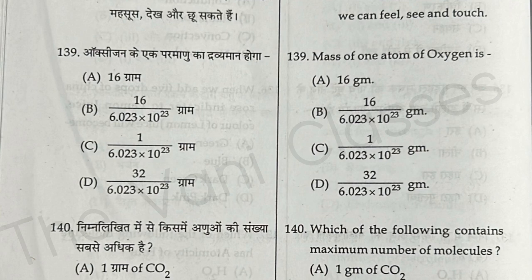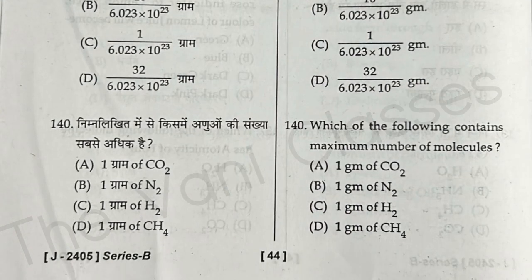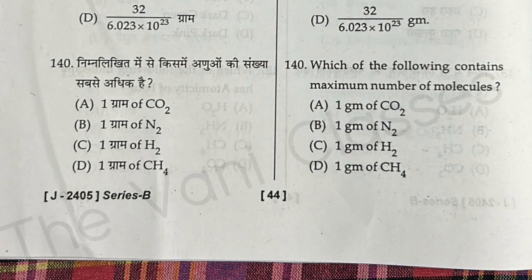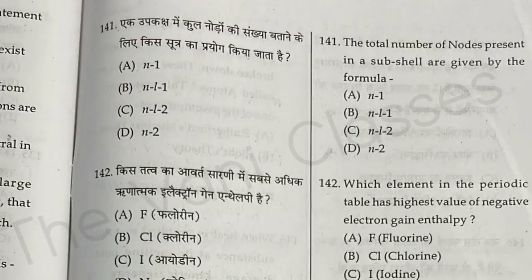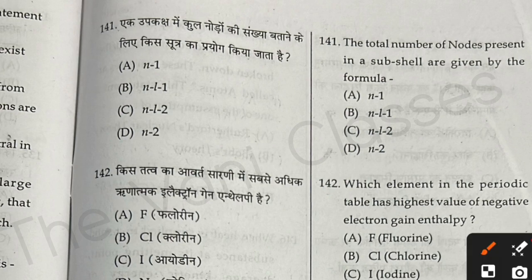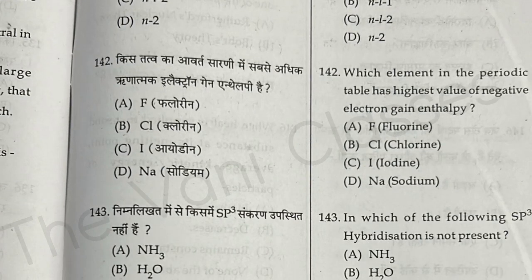Question 139: The mass of one atom of oxygen — the right answer is option B, which gives the mass of one atom of oxygen. Question 140: Which of the following contains the maximum number of molecules? The right answer is option C. Question 141: The total number of nodes present in a subshell are given by the formula n minus 1 — option A.